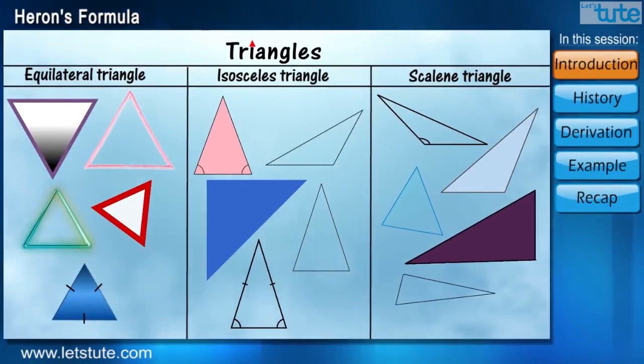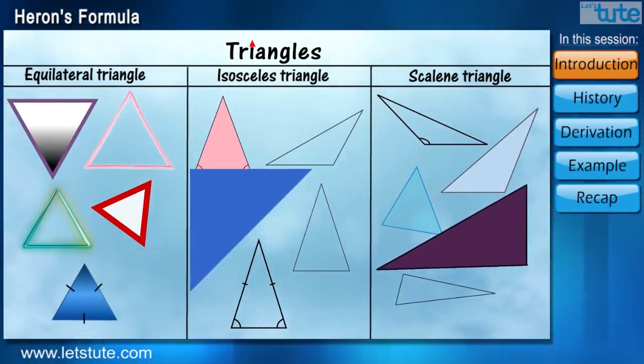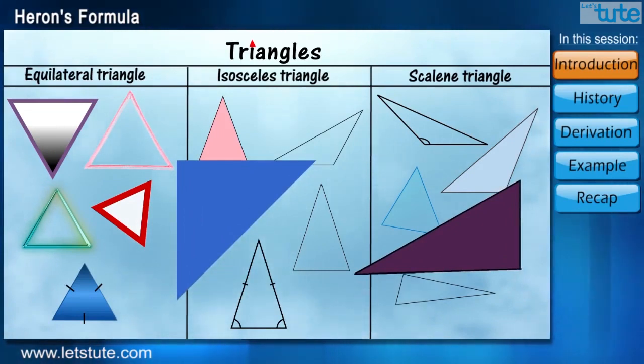Are we forgetting about some triangle? Yes, a right angled triangle. It's just a triangle with one angle as 90 degrees.